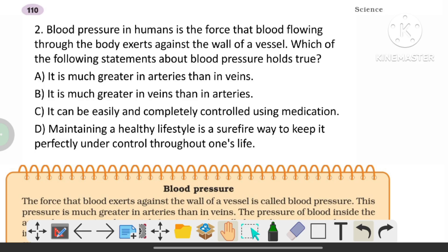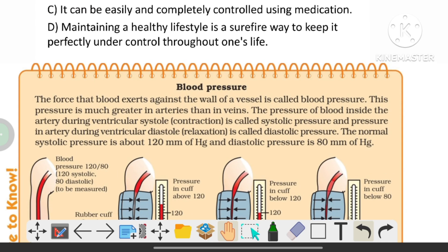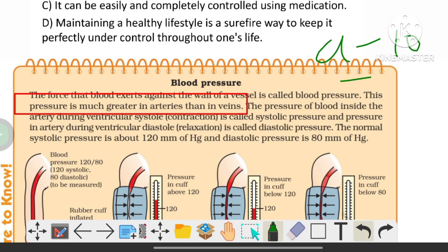Blood pressure in human beings is the force that blood flowing through the body exerts against the wall of a vessel. Which of the following statements is true about blood pressure? The correct answer is option A — blood pressure is much greater in arteries than in veins. This is from the class 10 NCERT science textbook.